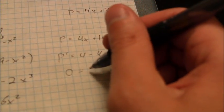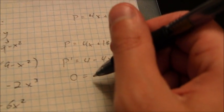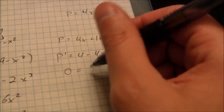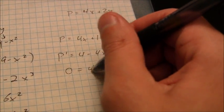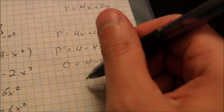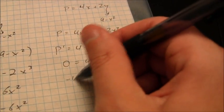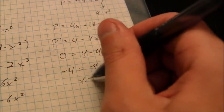So to make that equal to 0, to get the maximum perimeter possible, set that equal to 0. So, negative 4 is equal to negative 4x. x, of course, is going to have to equal 1.